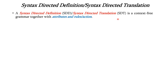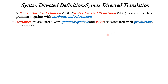An SDD or SDT is a context free grammar together with attributes and rules or actions. Rules are defined by SDD and actions are performed by SDT according to the rules given. Always an attribute is associated with a grammar symbol and rules are associated with the productions.